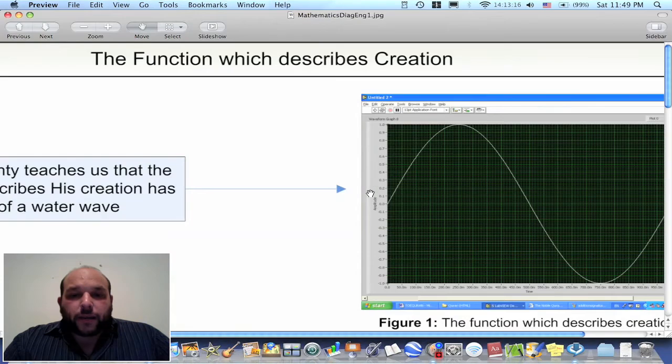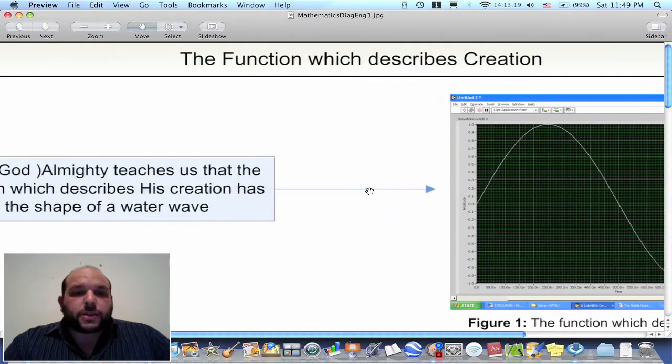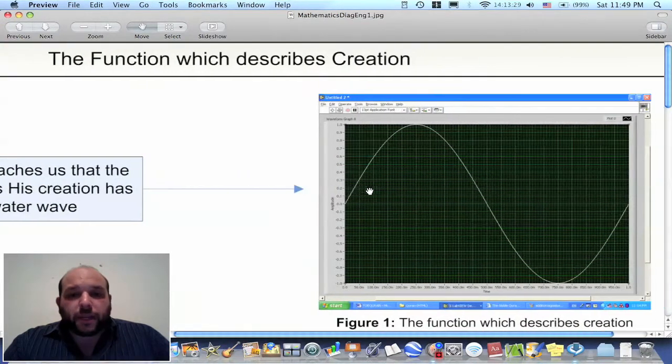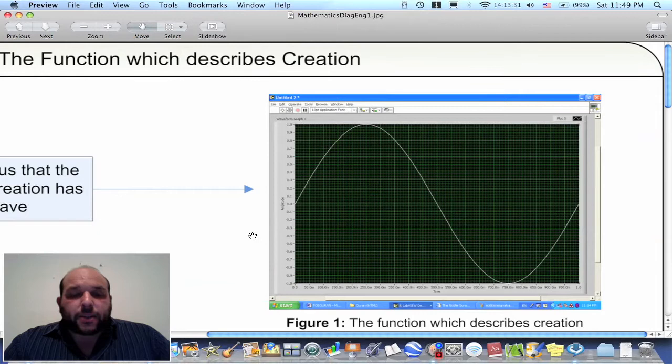So if we come back here to mathematics, since Allah teaches us that He has made from water every living thing, this means that the function which describes creation must have the shape of a water wave. Meaning that the basic function which describes the signals in creation should have this shape, the shape of a water wave. Since everything is made from water, then the energy in creation, the function that describes the energy in creation and how energy propagates, should have the shape of a water wave.